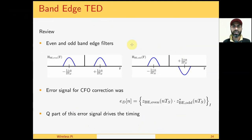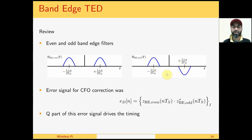One approach to estimate symbol timing jointly with carrier frequency offset is the band-edge timing error detector. We have already discussed band-edge detectors in the frequency lock loop case. As a review, we had two filters: a half-cycle of a cosine, called the even band-edge filter, and a half-cycle of a sine, called the odd band-edge filter. We obtained an error signal for CFO correction as the output of the even band-edge filter multiplied with the conjugate of the output of the odd band-edge filter. The in-phase part of this product drove the frequency lock loop, and the Q part of the same product can be used to drive the timing lock loop.